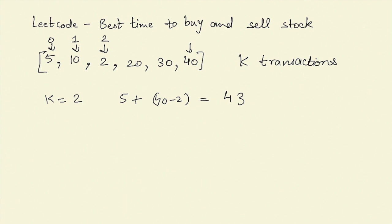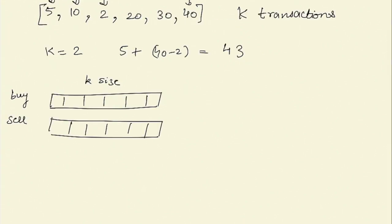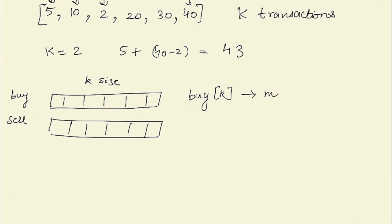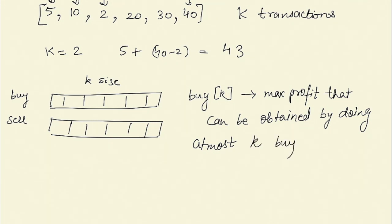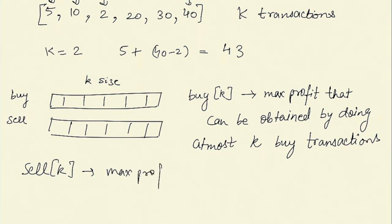To solve this problem we will use dynamic programming. We will take two arrays, buy and sell, of size K, where buy[k] stores the maximum profit that can be obtained by doing at most K buy transactions, and sell[k] stores the maximum profit that can be obtained by doing at most K sell transactions.